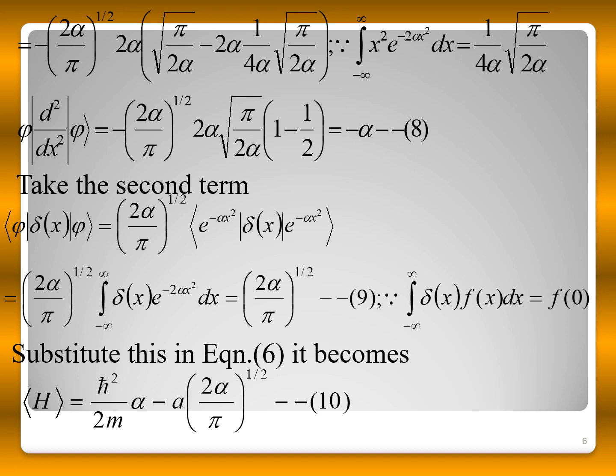Substituting all values, the expectation value of d²/dx² is −α. For the second term, using the delta function property ∫δ(x)·f(x)dx = f(0), the expectation value of the delta function is (2α/π)^(1/2). Therefore, the expectation value of the Hamiltonian is ⟨H⟩ = −(ℏ²/2m)·α − a·(2α/π)^(1/2).